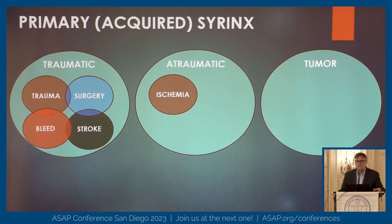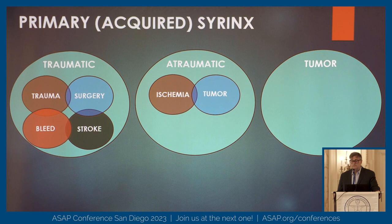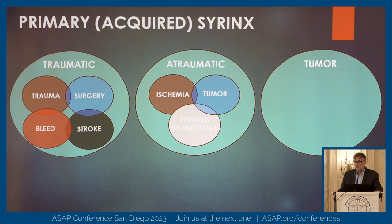Atraumatic ischemia, where you're in a state of compensation — the tissue is staying alive but it's not remaining optimally functional. Tumor formation. Stenosis, spondylosis, things of that sort, which I'll also talk about. These are common things that we see as we get older and there is some association with syrinxes in this population.